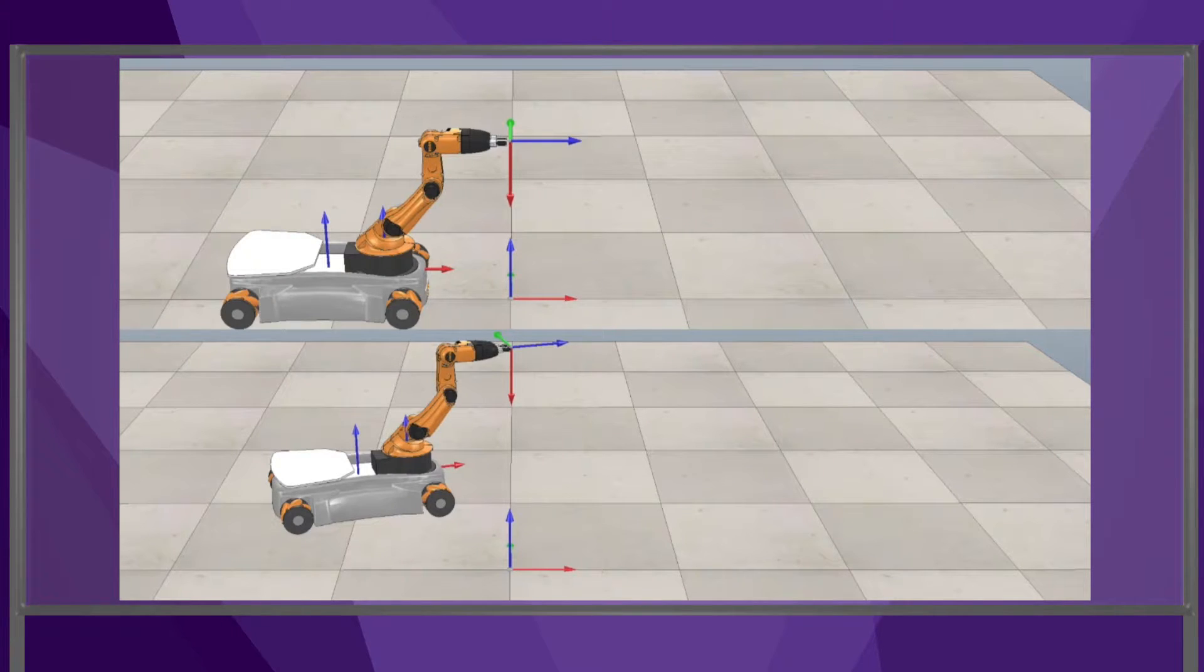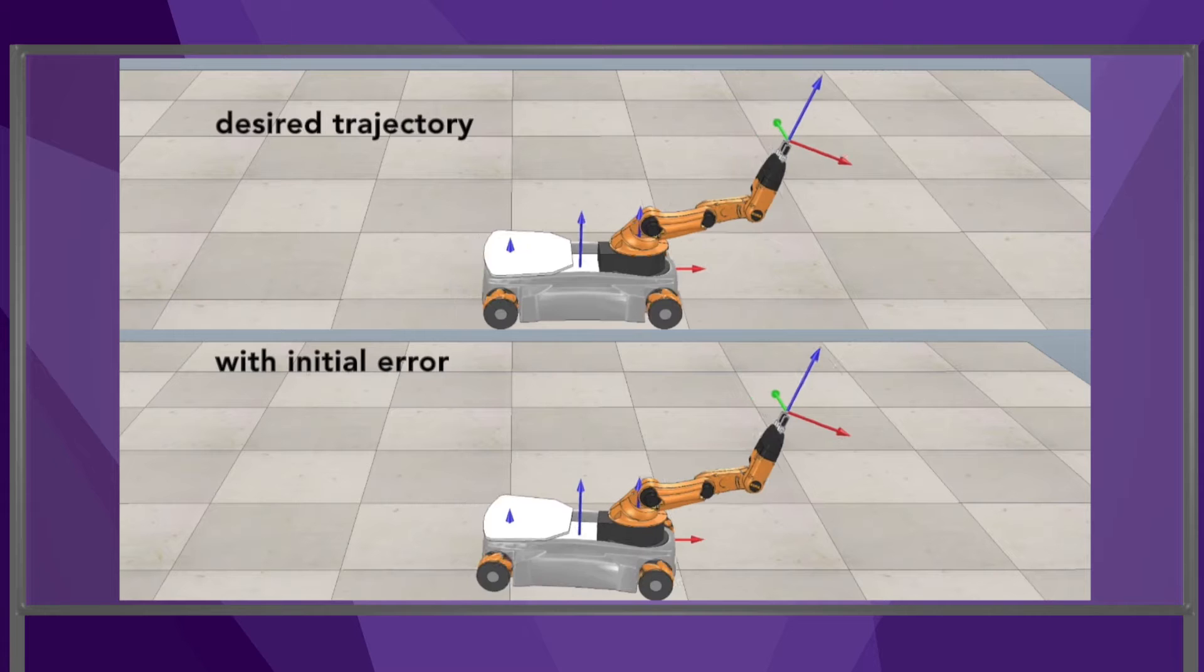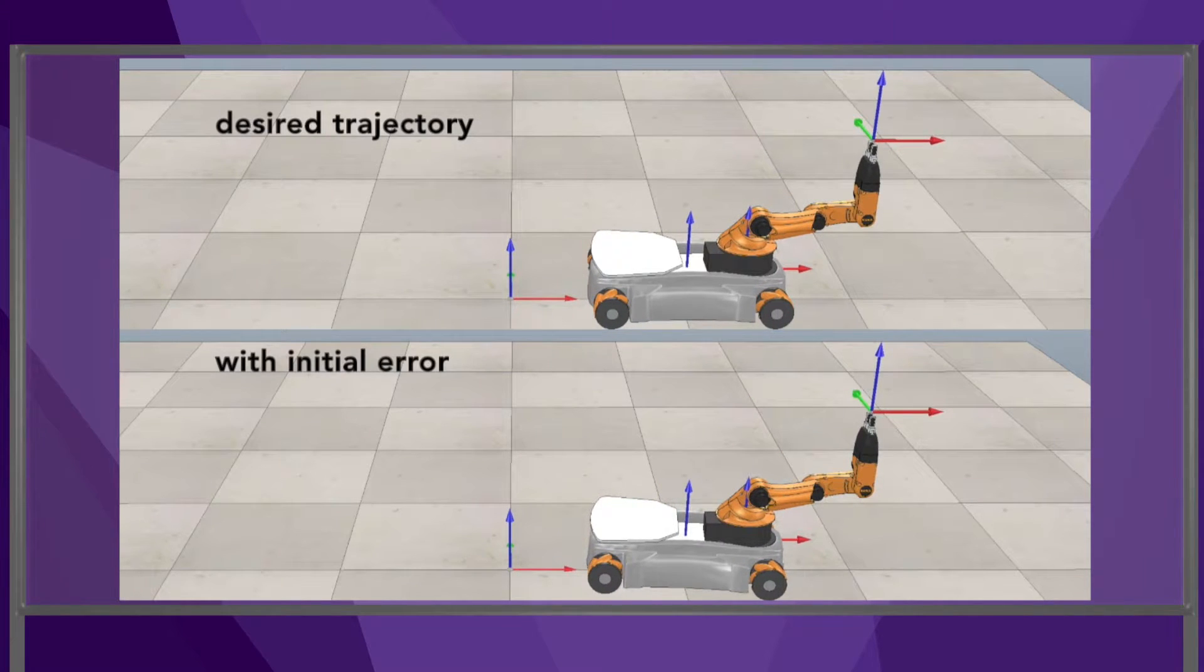Let's watch the desired trajectory and the feedback control trajectory one more time. The final end effector configurations are identical.